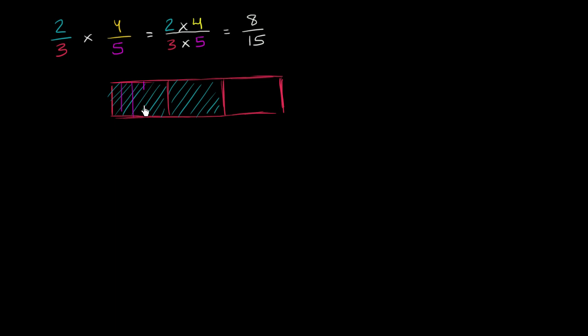So let's divide each into 5. 1, 2, 3, 4, 5. 1, 2, 3, 4, 5. And I could even divide this into 5 if I want. 1, 2, 3, 4, 5. And we want to take 4 fifths of this section here.